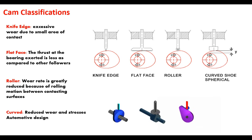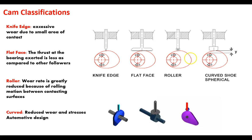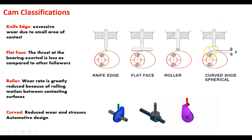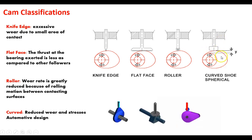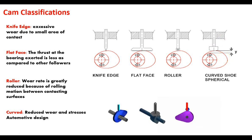Finally, there's the curved-surface follower, sometimes called a shoe or spherical surface. You're riding on a round surface but it doesn't roll, so there's really just a point or a line of contact between the cam and the follower. Those are the four classifications of the follower.